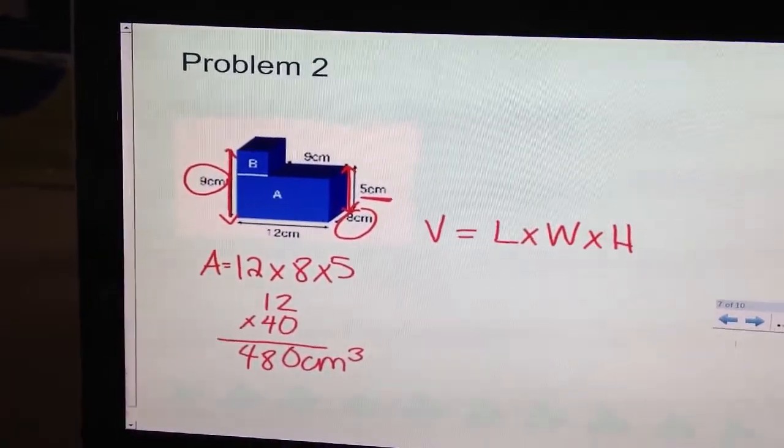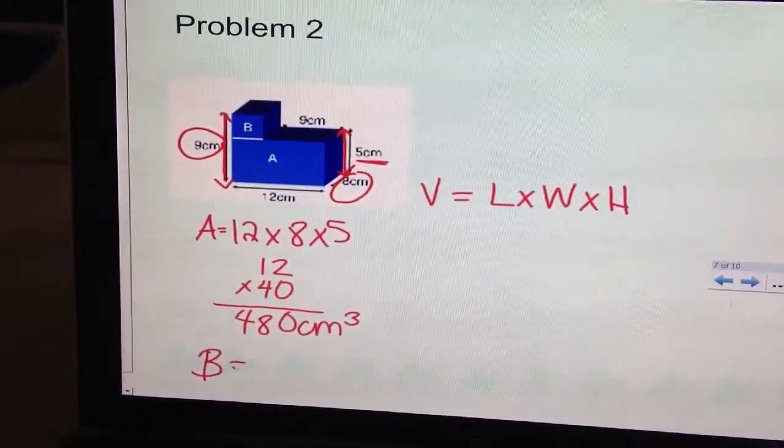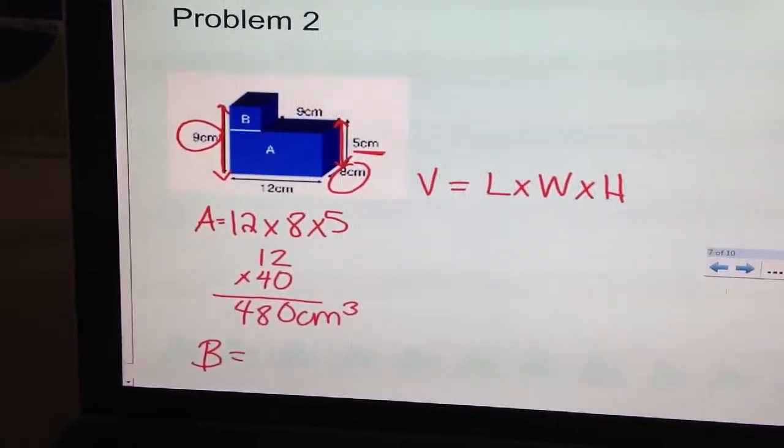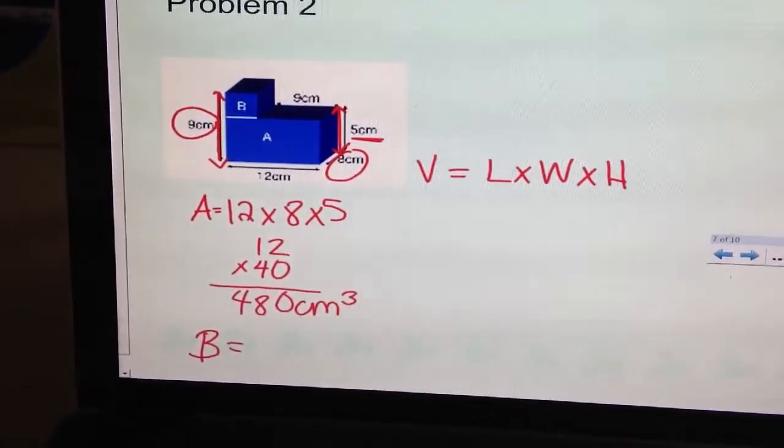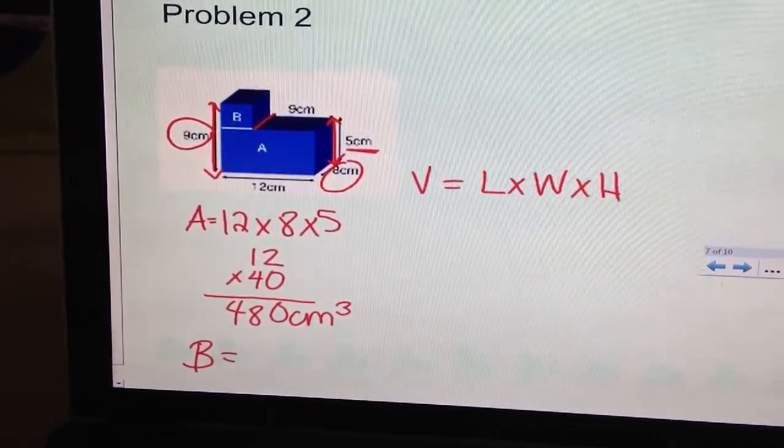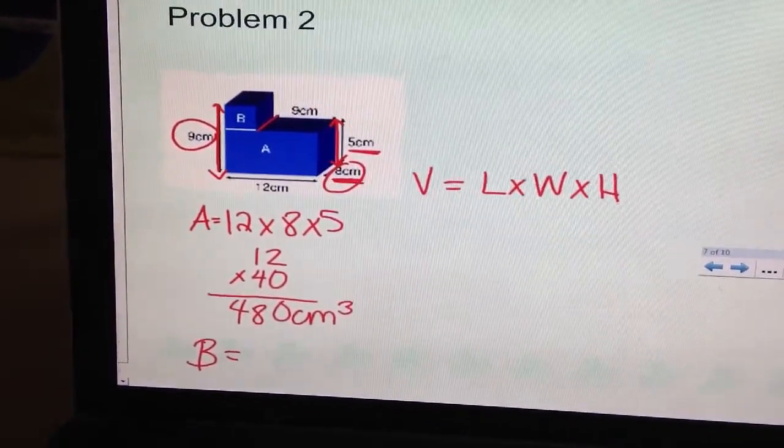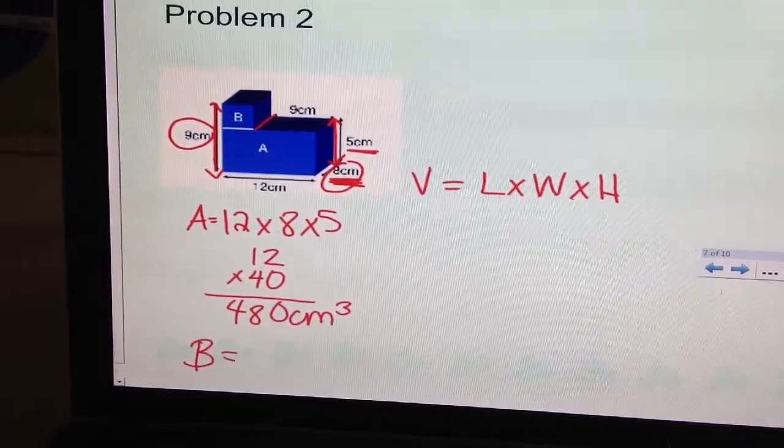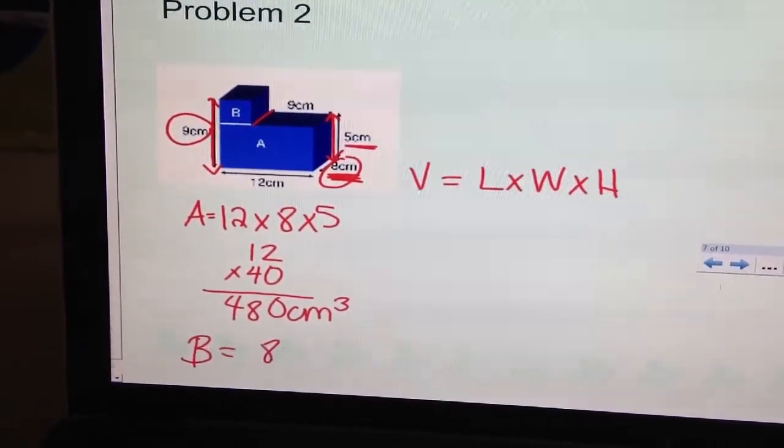That gives me 480 centimeters cubed. Now I want to find block B. Because remember, I'm going to find the volume of each, add them together. I can see that the depth is the same. I can tell by the picture it's the same as block A. Well, block A's depth was 8 centimeters. So I'm going to start with 8 centimeters for the depth.